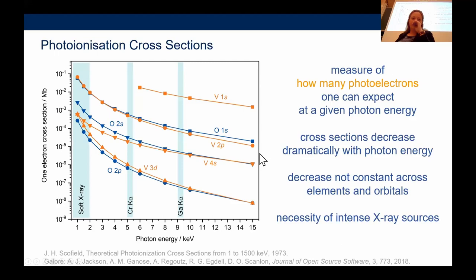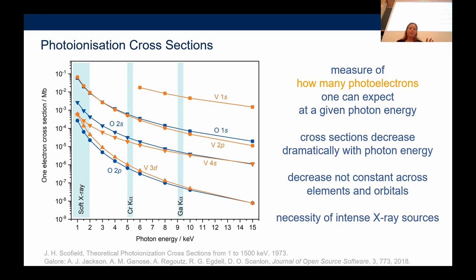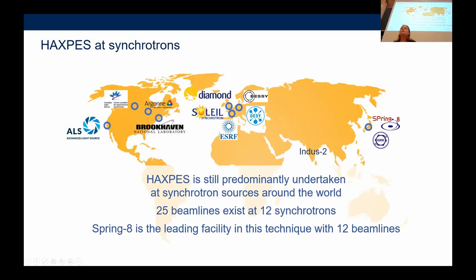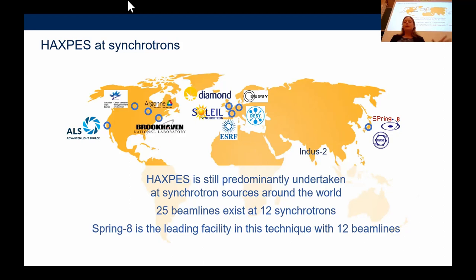So why don't we all have a HAXPES machine in the lab? The biggest challenge when moving from soft to hard X-rays is the dramatic drop in photoionization cross-section — basically how many photoelectrons you get for a specific atom and orbital. The y-axis on the cross-section plot is logarithmic: moving from the soft X-ray range to hard X-rays, it drops by orders of magnitude. Your signal for the same orbital from the same atom will be three, four, or five orders of magnitude lower. This is why you need very intense X-ray sources, and for a long time the only place to get those was at a synchrotron.